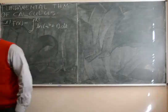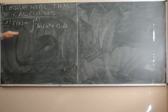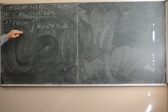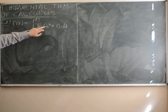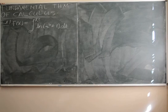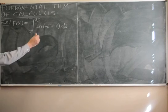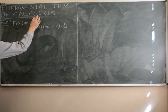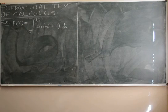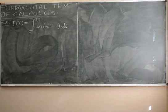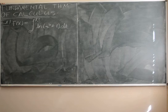In this example, we look at the function big F of x equals integral from 0 to x squared of ln(t⁴+1)dt. So you see, in this case, we don't have just x in the bound of the integral, we have some expression involving x, in this case x squared.